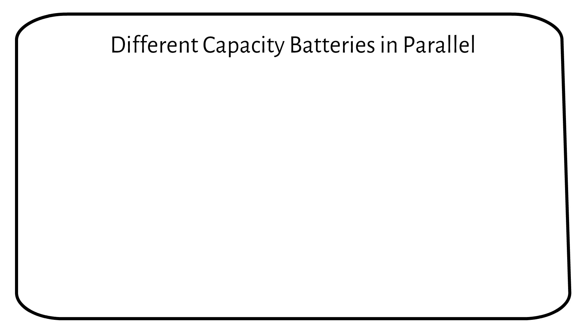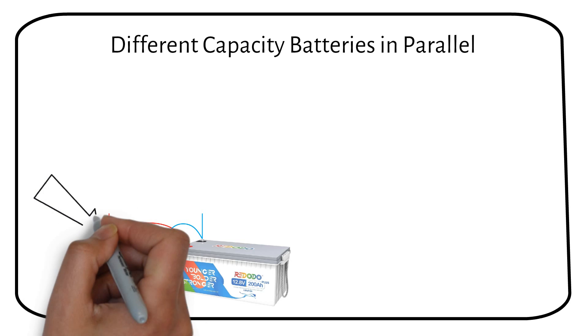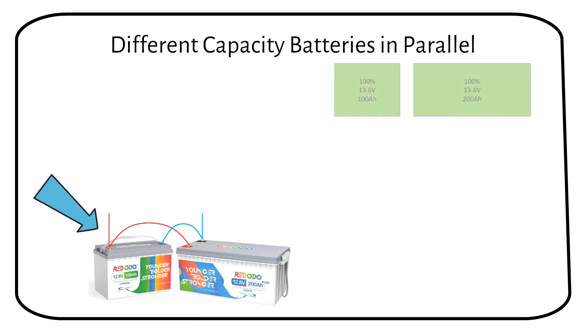A common question arises when people have different capacity batteries. Wiring different capacity batteries in parallel is generally not recommended, but it can be done. Let me explain with an example. We have a 12V 100Ah battery and 1 12V 200Ah battery. The voltages of both batteries will stay the same if the battery is either 100%, 50% or 0%.